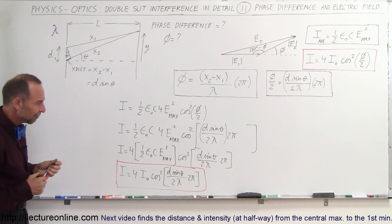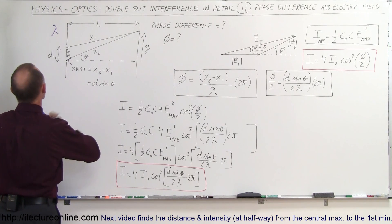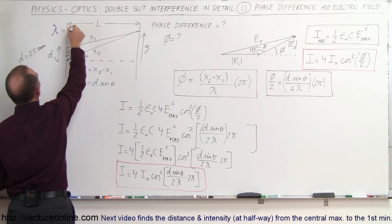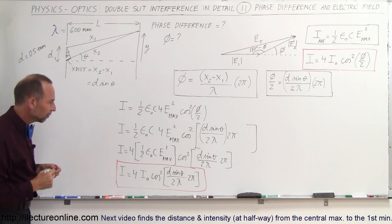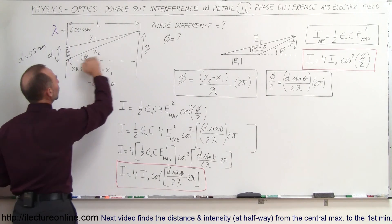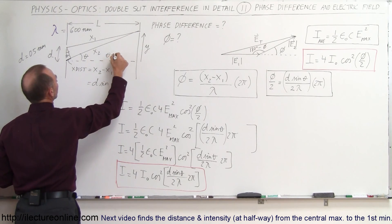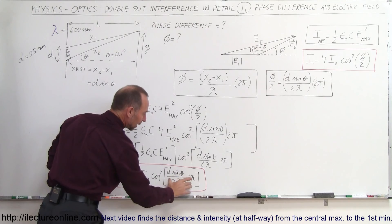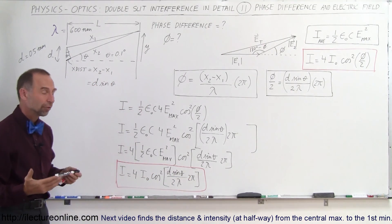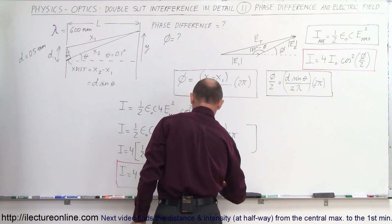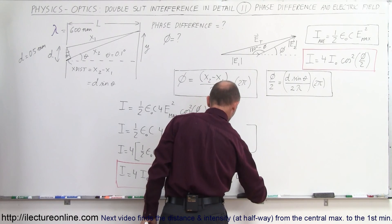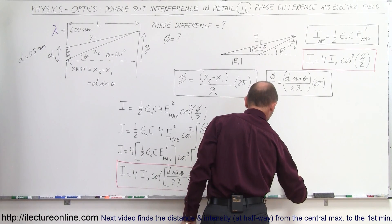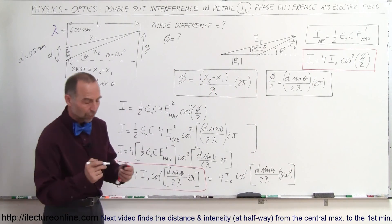To get a feel for this equation, let's plug in some numbers. Suppose we have a double slit with distance D = 0.5 mm, wavelength λ = 600 nm (typical for visible light), and we consider a point at angle θ = 0.1 degrees. We can express the argument in degrees: I = 4I₀ cos²(D sinθ / 2λ × 360°). Let's calculate what this quantity inside the cosine equals.